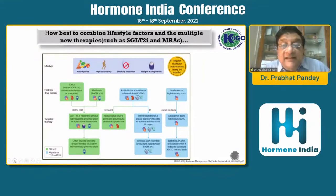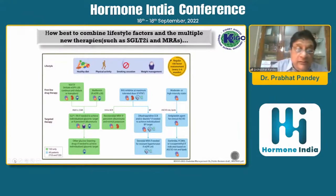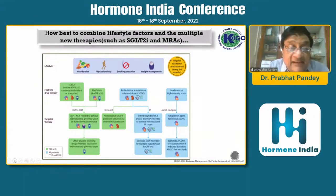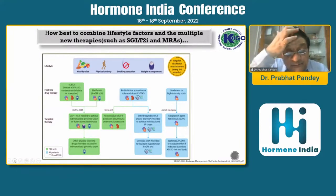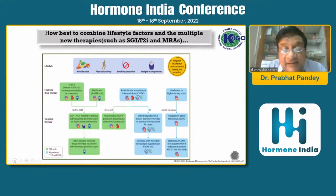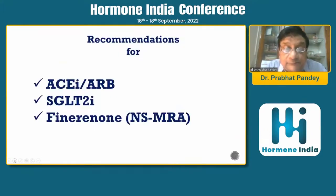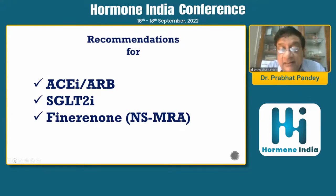Lifestyle measures and multiple new therapies such as SGLT2 inhibitors and MRAs can give good control of diabetes. The treatment ladder includes metformin, SGLT2 inhibitors, RAS inhibitors, then targeted antidiabetic therapy, and subsequently non-steroidal MRAs, which are now included in the management of diabetic kidney disease. So ACE inhibitors, ARBs, SGLT2 inhibitors, and the newer molecule — the non-steroidal MRA — are the key agents.